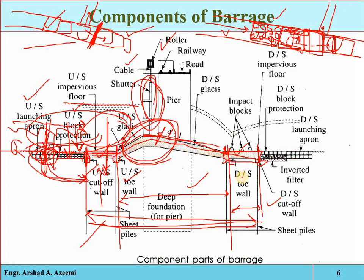The downstream cutoff wall is placed at the end of the downstream impervious floor. Its main function is to control the scouring of the downstream portion. The downstream toe wall is a second line of defense — if the downstream cutoff wall collapses, the toe wall provides protection to the main structure at the downstream area. These walls also provide stability against uplift pressure from seeping water. Impact blocks are constructed to destroy and dissipate the energy of high-velocity downstream flow and hydraulic jumps.